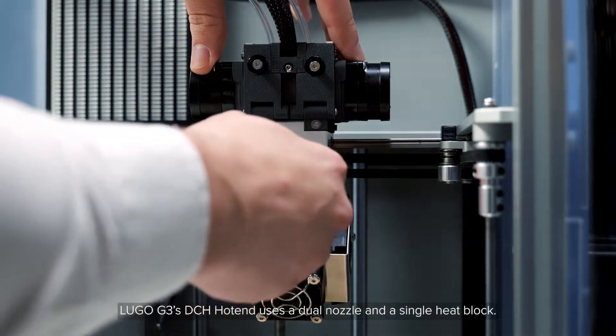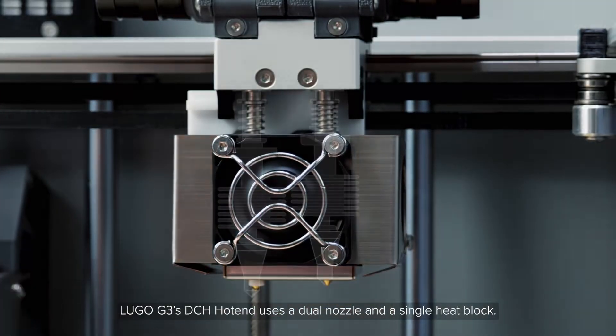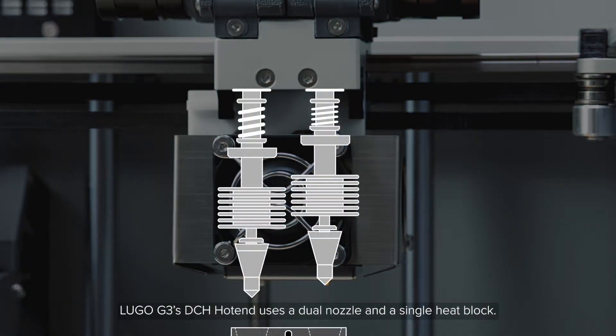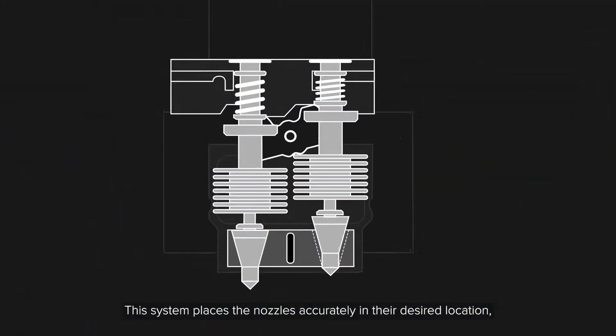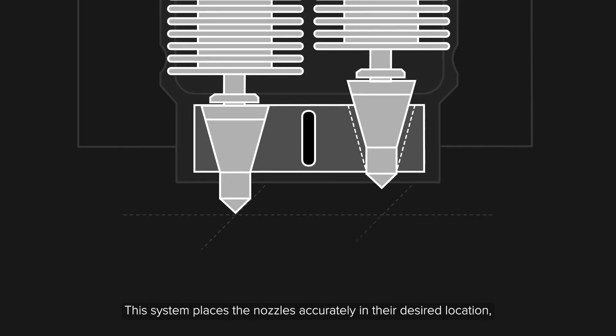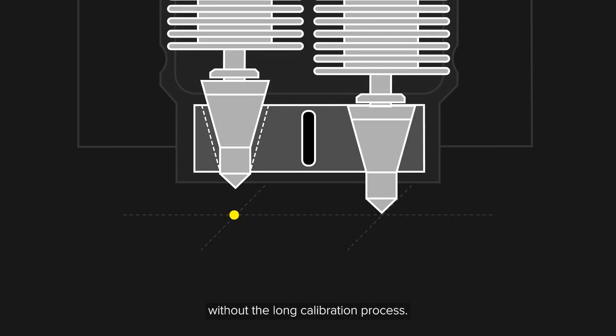Lugo G3's DCH hot end uses a dual nozzle and a single heat block. This system places the nozzles accurately in their desired location without the long calibration process.